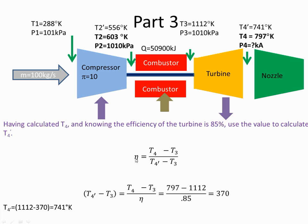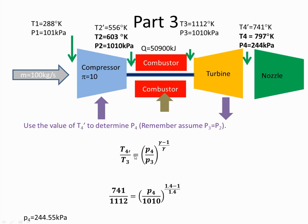We know the efficiency to be 85%. And plugging in the real T4 at 797 and we know what T3 is, we can work out what the ideal T4 would have been, and that works out to be 741 degrees Kelvin. And knowing T4 ideal and T3 and I know that the gas pressure coming into the turbine is 1010 kilopascals, I can get a value for P4. When I do that I work P4 to be out 244.55 kilopascals.